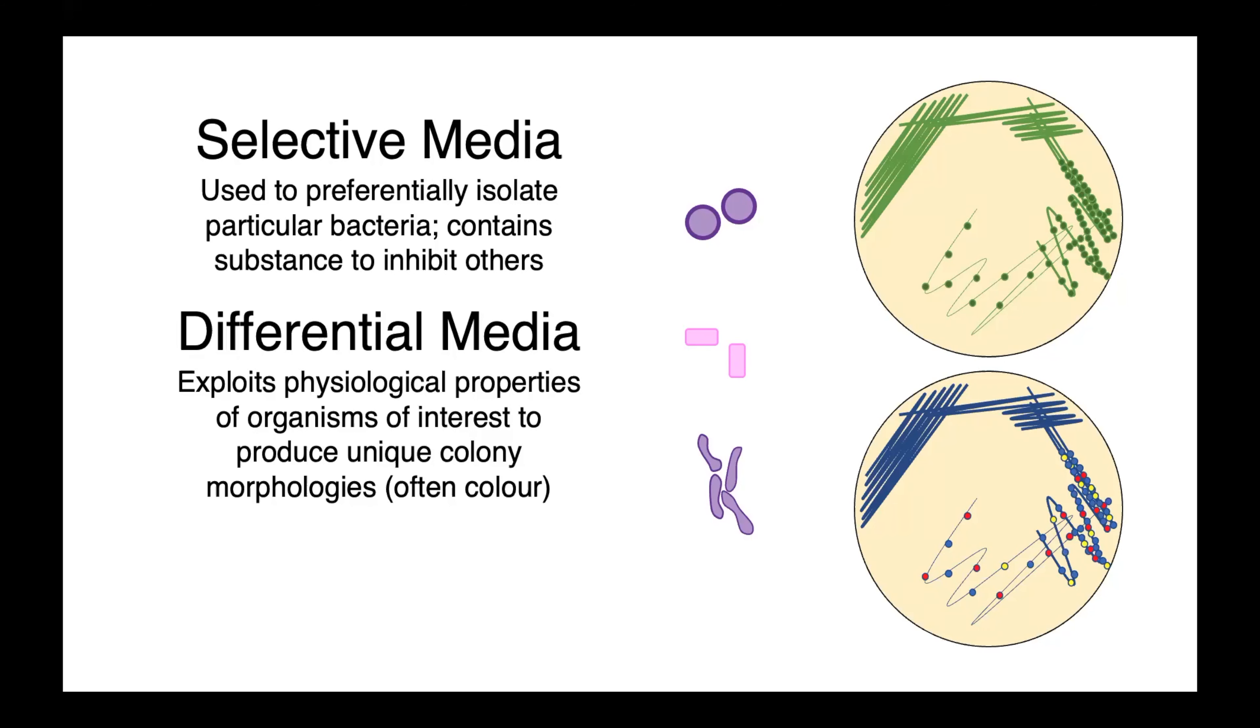Differential media exploit the physiological properties of each species in order to produce a unique colony morphology. So with these same three bacteria here, when we plate them on this media, you can see that our gram positive cocci gives us these yellow colonies, our gram negative rod gives us these blue colonies, and our gram positive rod results in red colonies.